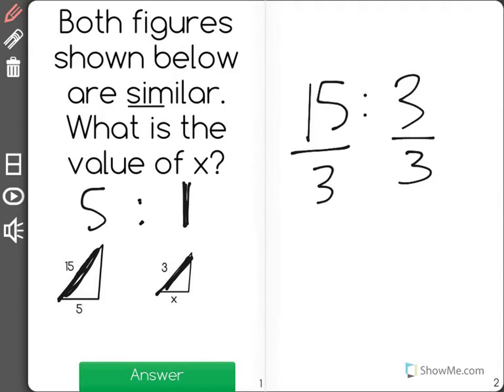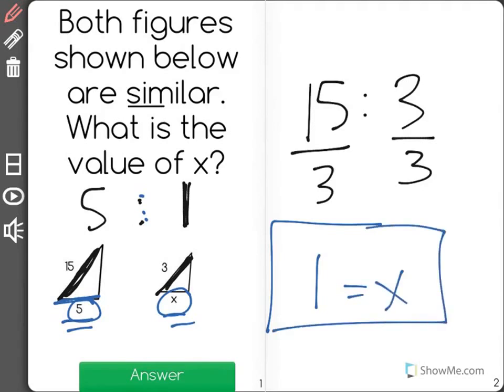So it wants us to find the value of x. I have a length of 5 down here and x over here. Well I already saw in my proportion that for every 5 I have, x would be 1 unit then. x is equal to 1 in this case.